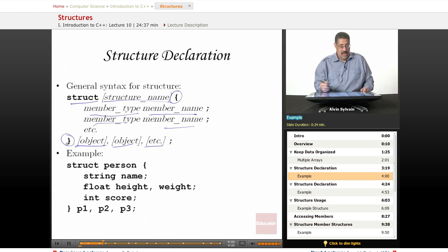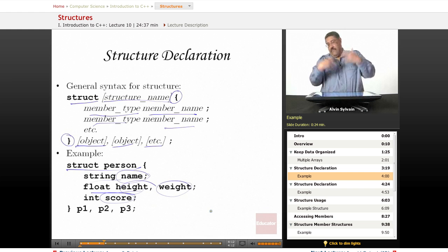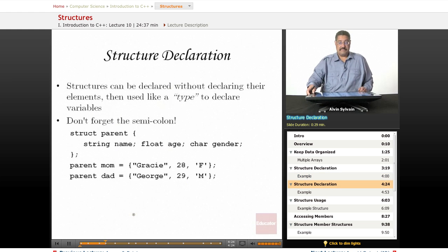You can add objects right there, and again these are optional. Here's an example: we have struct person. Person has a name which is a string, height, weight, and a score for whatever game the player is playing. We've got three players declared: p1, p2, and p3.